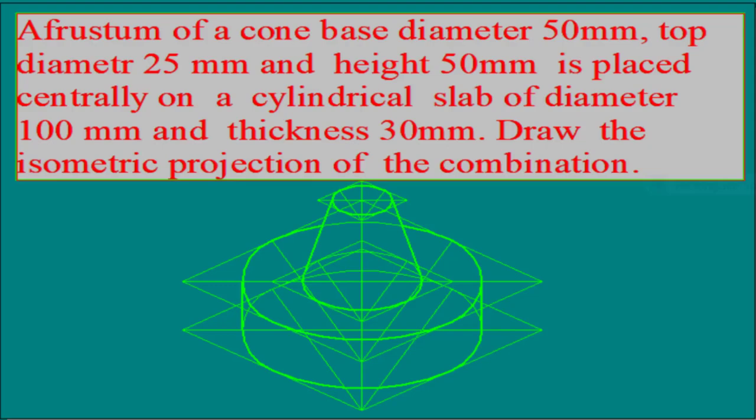Hi everyone. Today I will explain the isometric projection of a combination of solids consisting of a frustum of a cone of base diameter 50 mm, top diameter 25 mm, and height 50 mm, which is resting centrally on a cylindrical slab of diameter 100 mm and thickness 30 mm.